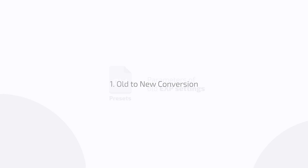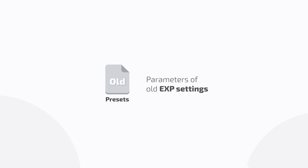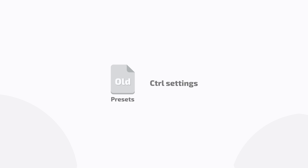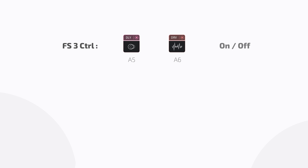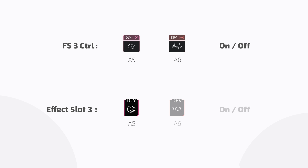For old-to-new conversion on Ampero 2 Stomp: control objects and parameters of old presets' EXP settings are moved to the new presets' EXP1 settings. Control from old presets corresponds to the new effect slot switch function. For instance, if foot switch 3 in old presets controls the on/off of slots A5 and A6, foot switch 3 in new presets becomes effect slot switch 3, associating with modules A5 and A6.